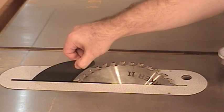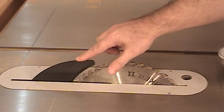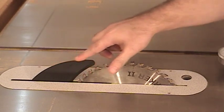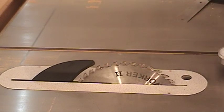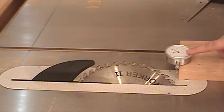In order for a splitter or riving knife to have its maximum effectiveness, you'd like to have it lined up exactly in line with the table saw blade. And the best way to check for that is by using a dial indicator.